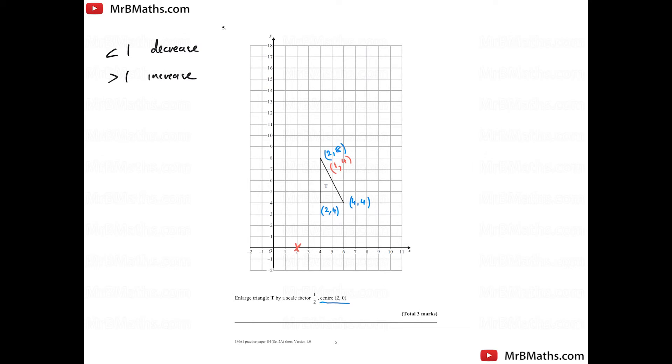I'm then going to do it for the other vertices. So I've got four, four here. So timesing those by half, I would get two, two. Now for this last vertice, I'd get one, two.